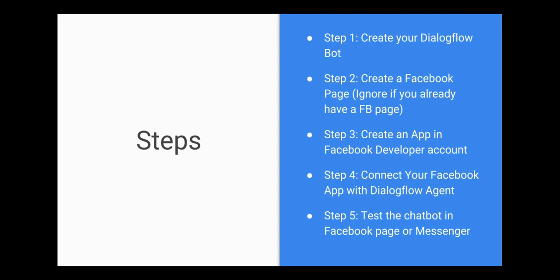The first step is to create your Dialogflow chatbot. The second step is to create a Facebook page — you don't need this if you already have one. The third step is to create an app in your Facebook developer account, and the fourth step is to connect your Facebook app with your Dialogflow agent. That's the main step. Finally, the fifth step is to test the chatbot in your Facebook page or Messenger. So we'll go through all these steps one by one.